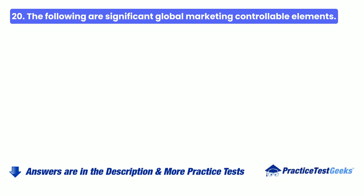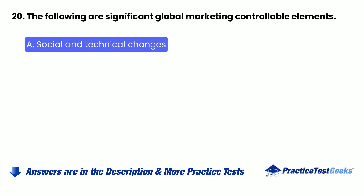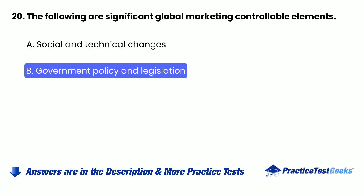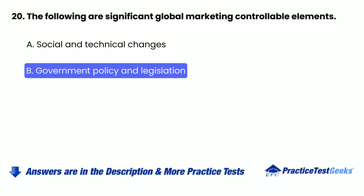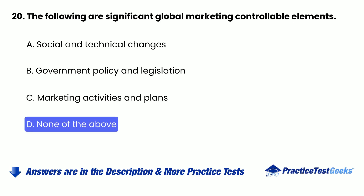Question 20: The following are significant global marketing controllable elements — A. Social and technical changes, B. Government policy and legislation, C. Marketing activities and plans, D. None of the above.